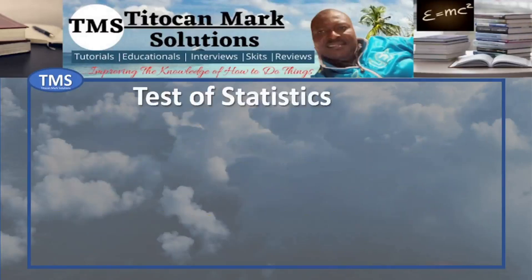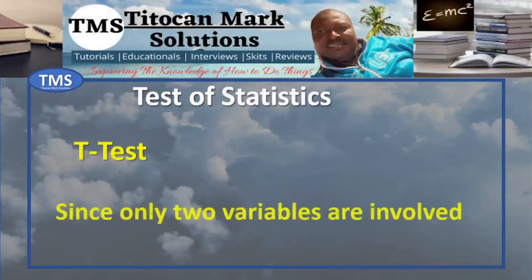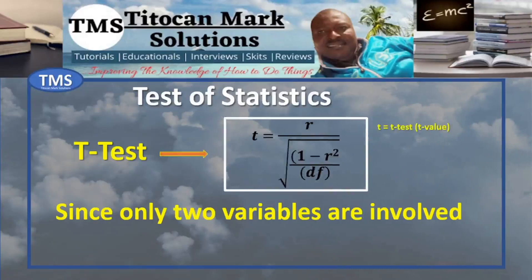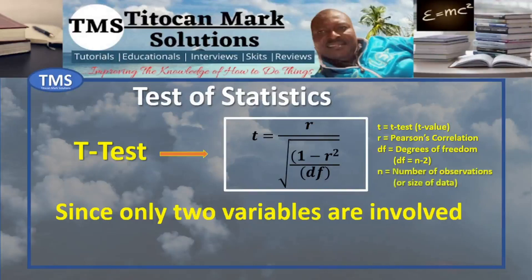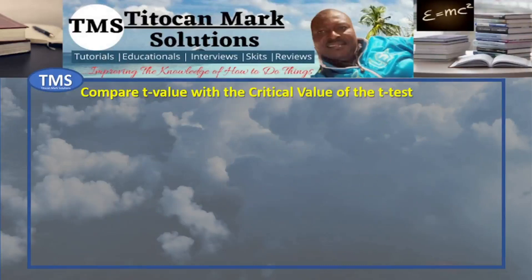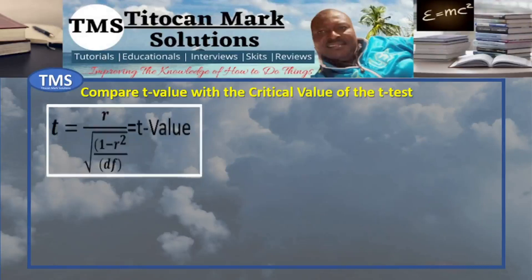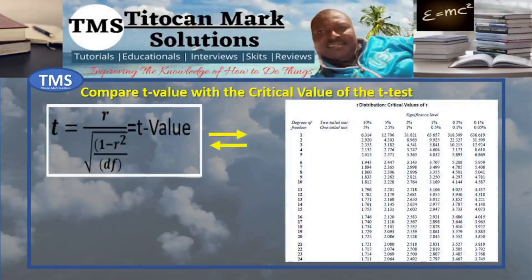The best test of statistics option for Pearson's Correlation would be a t-test, since only two variables are involved. The statistical function for calculating the t-test is: t equals r times the square root of (df) divided by (1 minus r squared), where t is the t-value, r is Pearson's Correlation, and df is degrees of freedom given as n minus 2, where n is the number of observations. After performing the t-test, you compare the t-value with the critical value obtained from the t-distribution table at the same degrees of freedom and significance level. The outcome of this comparison will help decide whether the correlation is statistically significant or not.